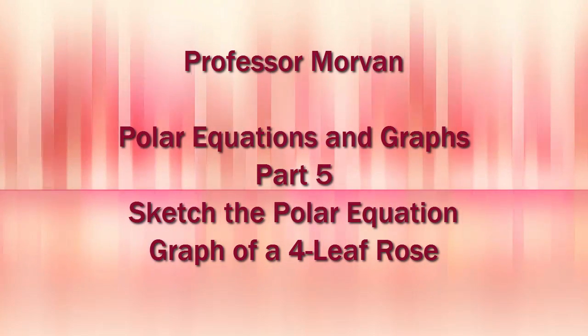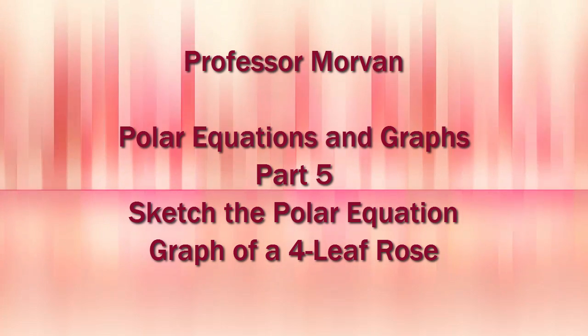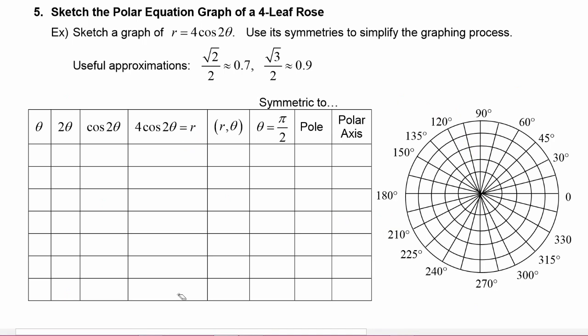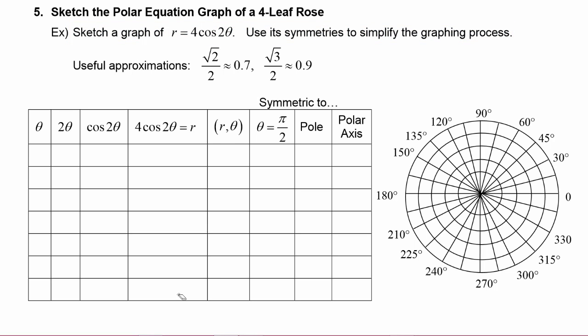In part five of our lesson on polar equations and graphs, we will sketch the polar equation graph of a four-leaf rose. In this example we will sketch a graph of r equals four cosine two theta. We will use its symmetries to simplify the graphing process. Just a reminder that we will use approximations: for radical two over two we will use 0.7, and for radical three over two we will use 0.9.